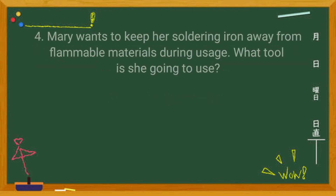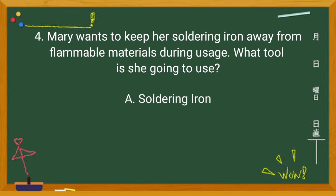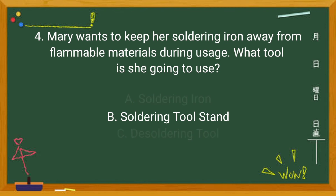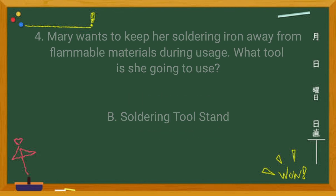Number 4: Mary wants to keep her soldering iron away from flammable materials during usage. What tool is she going to use? Letter A — Soldering iron. Letter B — Soldering tool stand. Letter C — Desoldering tool. If your answer is letter B, you got it right.